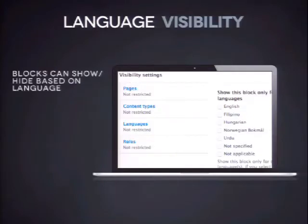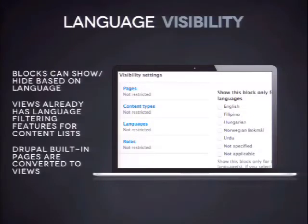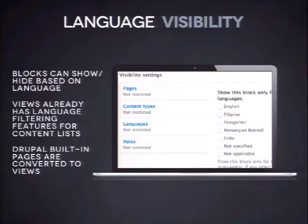We have language visibility — for each block on the page, and Drupal 8 is making a lot of things into blocks, we have language visibility so you can control which languages those blocks are displayed in. There's also built-in language support in views, so you can filter for language in all kinds of views on your Drupal site. Nearly all front-facing pages in Drupal core are now built with views, so you can configure the front page or anything else to filter by language. That was a very common request and Drupal never had it before.